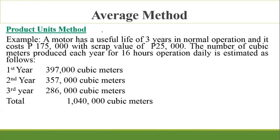Example: A motor has a useful life of three years in normal operation. It costs 175,000 pesos with a scrap value of 25,000 pesos. The number of cubic meters produced each year for 16 hours of daily operation: Year 1: 397,000 cubic meters; Year 2: 357,000 cubic meters; Year 3: 286,000 cubic meters — with a total of 1,040,000 cubic meters.